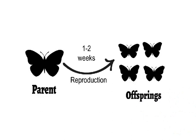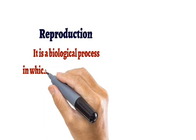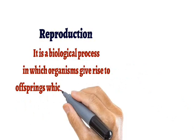In the process of reproduction, the parent gives rise to offsprings. Reproduction is a biological process in which organisms give rise to offsprings which are similar to them.